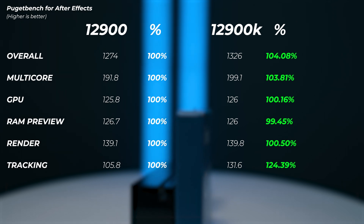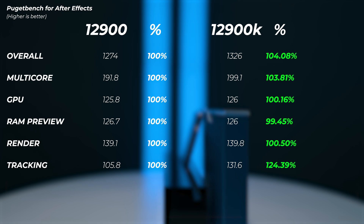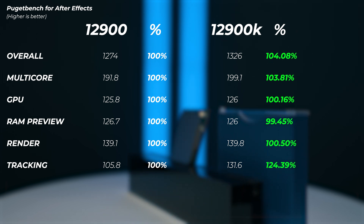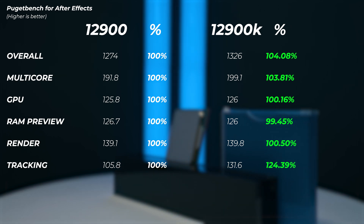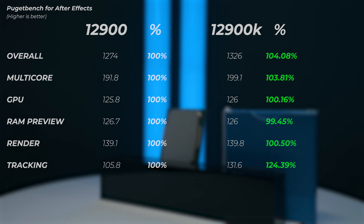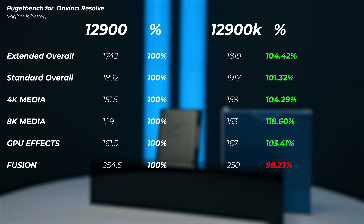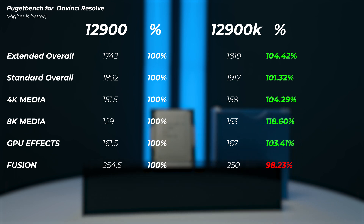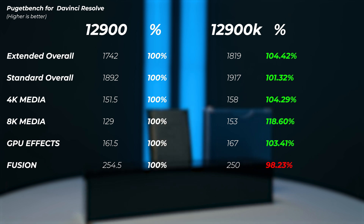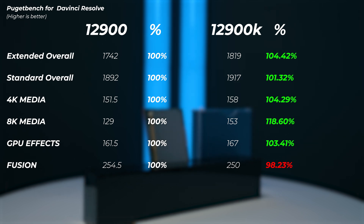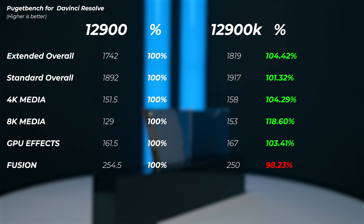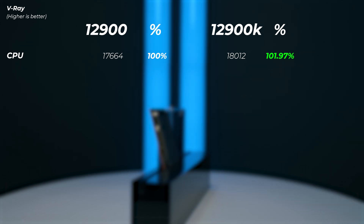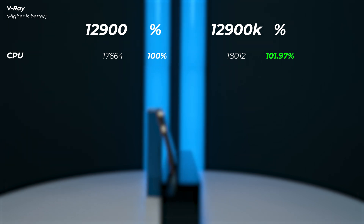In After Effects, the 12900K is 4% faster in the overall score, but about 24.3% faster on the tracking score, which is just crazy. In general, it's about 4–5% faster on the K chip in After Effects. In DaVinci Resolve, the 12900K is 4.4% faster in the extended score and about 1.3% faster in the standard overall score. Looking at the 8K media score, the K version is 18.6% faster — quite a big leap. However, in the Fusion score, we're losing about 1.8% to the 12900. Moving on to V-Ray, the 12900K is 1.97%, pretty much 2%, faster than the 12900.